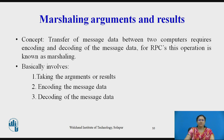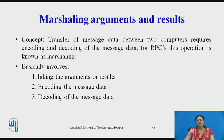Now we will see marshaling arguments and results. What is exactly the concept of marshaling? Transfer of message data between two computers requires encoding and decoding of the message data. In RPC, this operation is known as marshaling of data. Marshaling basically involves taking the arguments or results, encoding the message data, and then decoding the message data again.